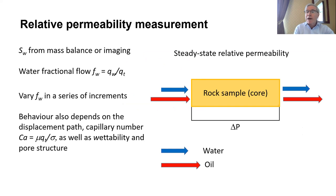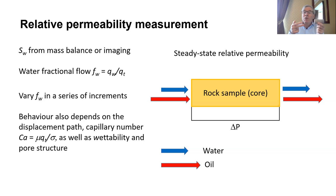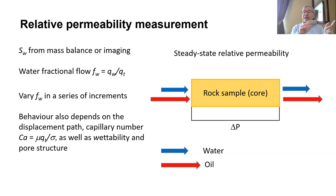Before we start, let's talk about the measurements — how we measure relative permeability. We take a sample of rock, and we inject two phases, oil and water, through the rock until we reach what's called steady state. Steady state is when we're injecting oil and water at the inlet, it's coming out the outlet, and within the rock there is no change in either the pressure difference across the fluids or in the saturation.